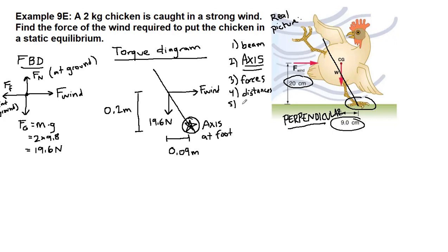All right, and then the last step is the direction, the clockwise, counterclockwise. So if the wind suddenly died down entirely, and now the chicken just has the force of gravity, that chicken would rotate counterclockwise to be able to put his foot back on the ground. So the chicken would put their foot back on the ground by rotating counterclockwise if the wind were suddenly gone.